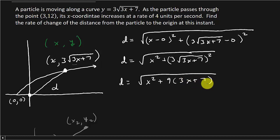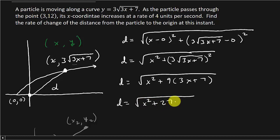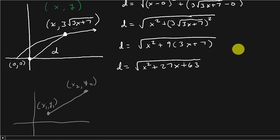When you square that expression, you square the 3 to get 9, and squaring the square root gives you what's underneath. So the distance simplifies to the square root of x squared plus 27x plus 63. That's your distance function.